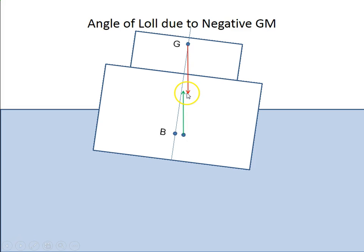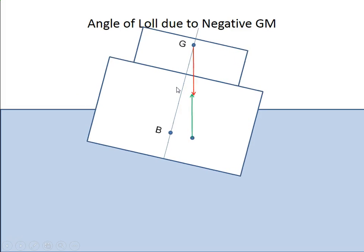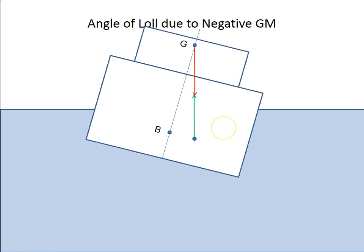But in this case, that GZ is a capsizing or upsetting arm. And this vessel is going to continue to incline. Even if there's no force, a force can just start it in motion. You could remove that force. The vessel will continue to incline until B moves back underneath G.